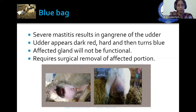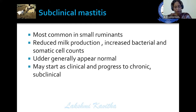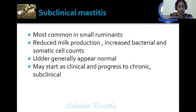Subclinical mastitis is most common in small ruminants, presenting with reduced milk production and increased bacterial and somatic cell counts. Generally we do not take somatic cell counts, but the normal range is up to 5 to 10 lakh cells. If it is less than 5 lakh, the milk is normal; if it is more than 10 lakh, the milk is showing subclinical mastitis. The udder generally appears normal but may start as clinical and progress to chronic and subclinical.